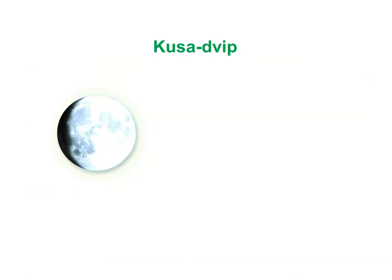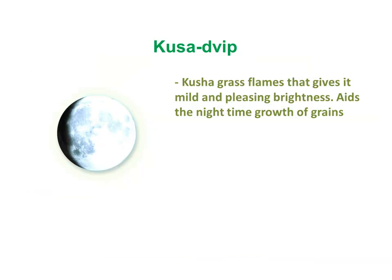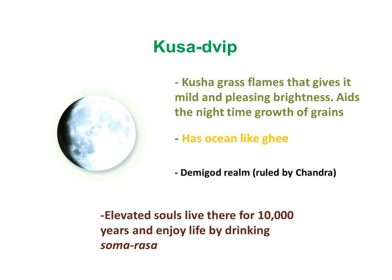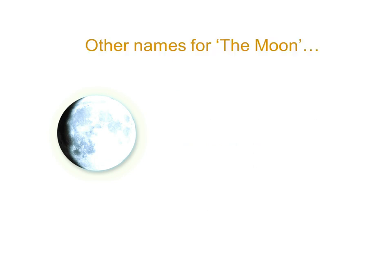Focusing first on Kushidreep. Kushidreep has flames that give it a mild and pleasing brightness that aids the night-time growth of grains. Has an ocean-like ghee, a demigod realm ruled by Trandra, and elevated souls live there for ten thousand Earth years and enjoy life by drinking sommer rass. We understand this is to be a celestial vision, rather than a mundane vision of our familiar moon.